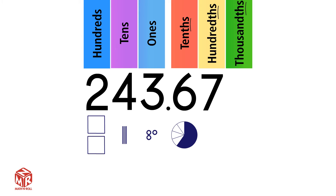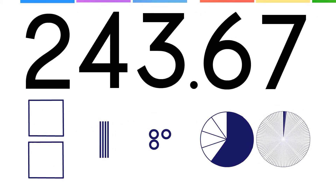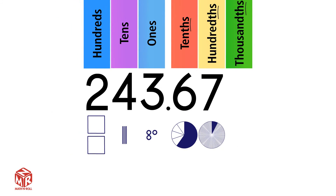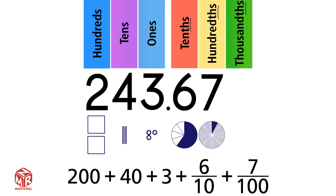Now let's take a look at the hundredths. 7 hundredths is the same as saying 7 out of 100 parts. We can write 243 and 67 hundredths in expanded form: 200 plus 40 plus 3 plus 6 over 10 plus 7 over 100.